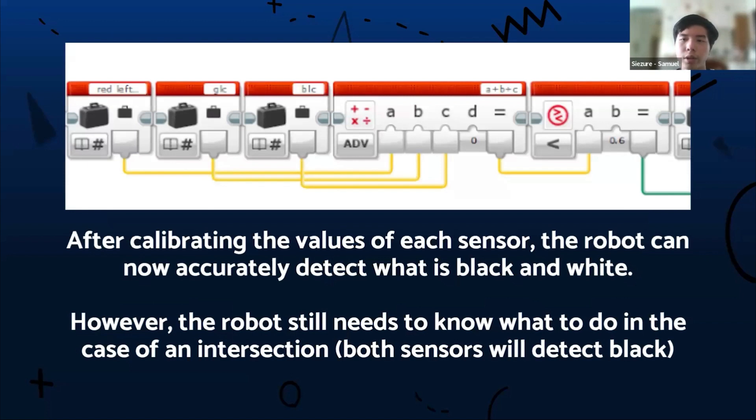However, in the scenario of an intersection, the robot still doesn't know what to do. By using the comparison block at 0.6, this block tells the robot to compare whether the reading is below 0.6 or not. If it's below 0.6, because it detects black and the reading from black will be zero, which is less than 0.6, it's able to proceed to the next block. If it is not, it will be rejected and it will continue line tracking.